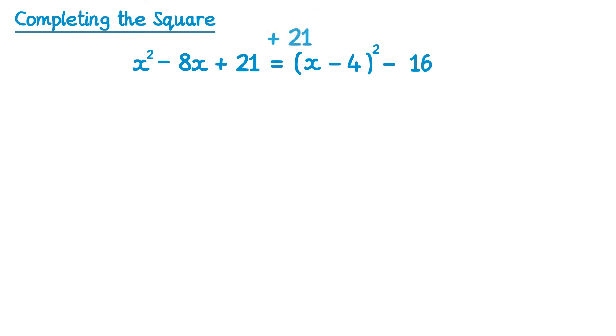And finally, the plus 21 at the end needs to be written at the end of the right hand side too. The final step then is to simplify this, so negative 16 add 21, and we can simplify that to get plus 5. So now we've written this in the completed square form.